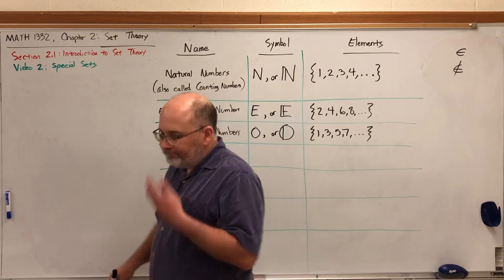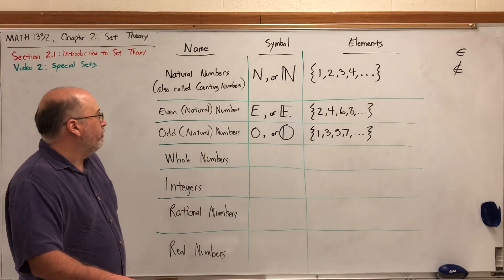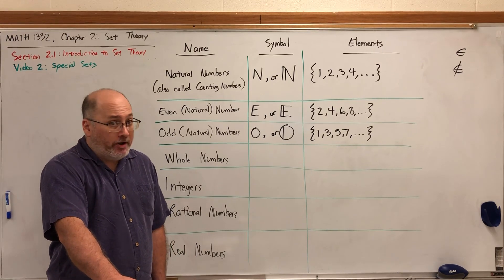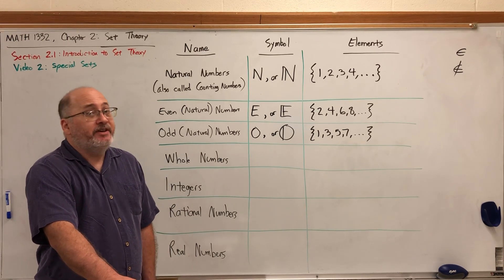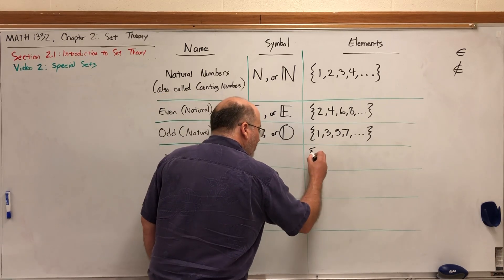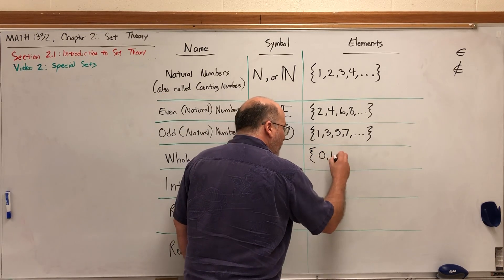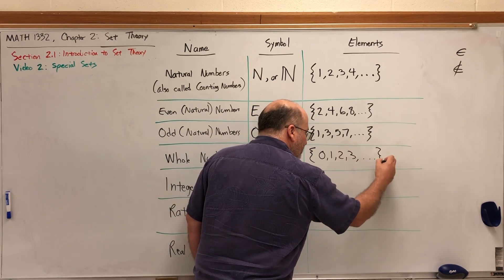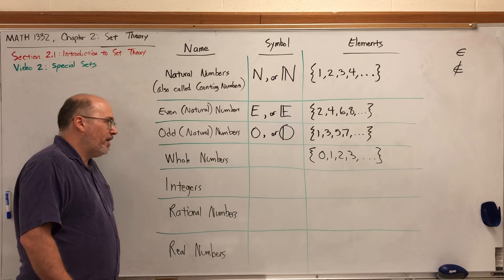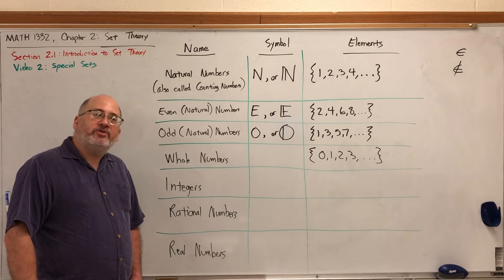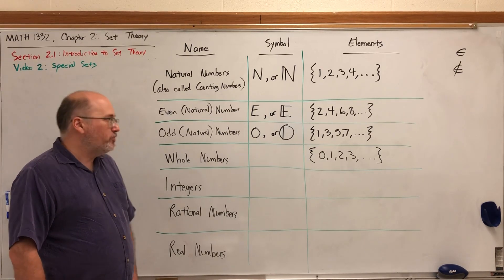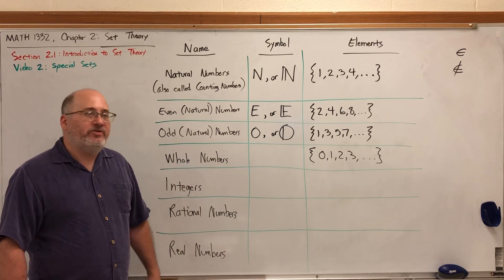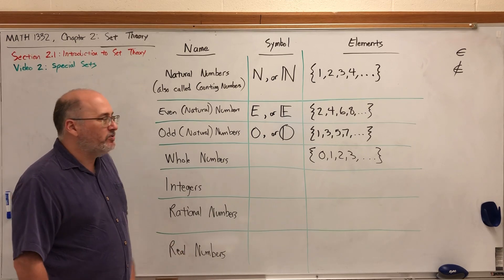What are the whole numbers? The whole numbers are practically the natural numbers with one additional element. Instead of starting at one, the whole numbers start at zero: zero, one, two, three, dot, dot, dot. There is a reason why the whole numbers are the whole numbers and the natural numbers are the natural numbers.